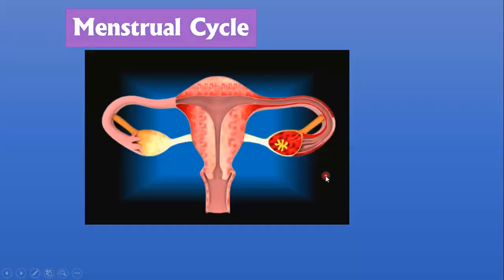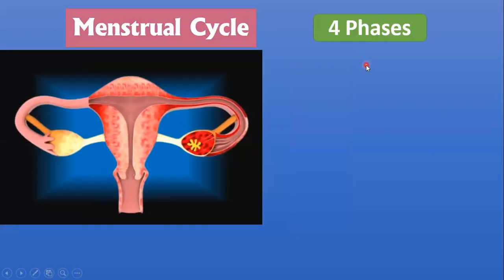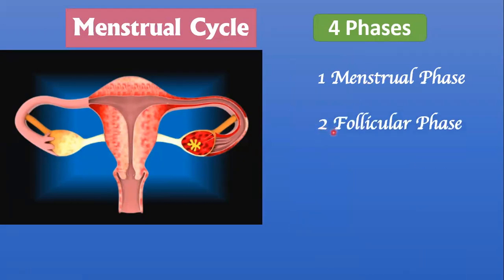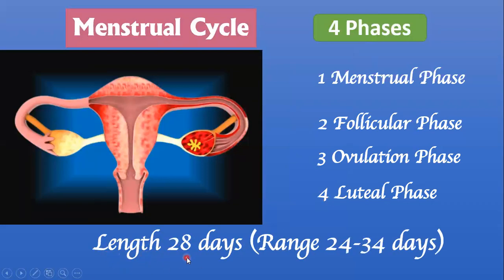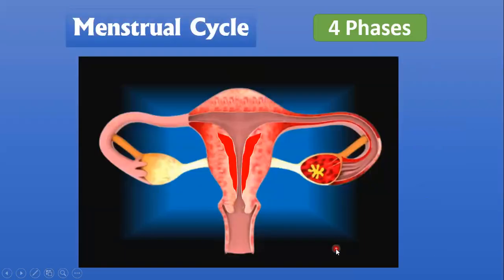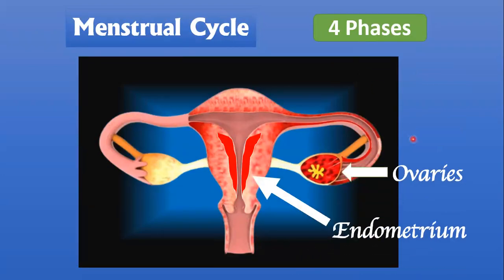The menstrual cycle has four different phases: the first phase is the menstrual phase, the second is the follicular phase, the third is the ovulation phase, and the fourth is the luteal phase. The total length of the menstrual cycle is 28 days, which may range from 24 to 34 days. In all different phases, major changes are taking place in the ovaries and the endometrium, which is the inner lining of the uterus.